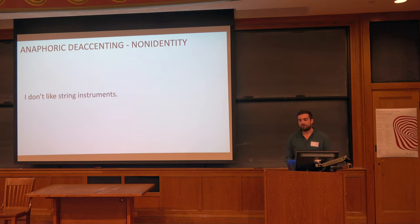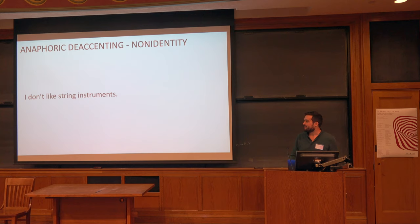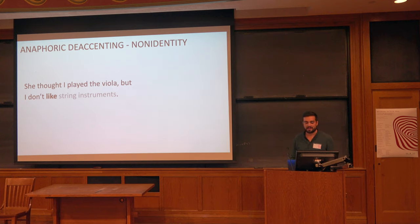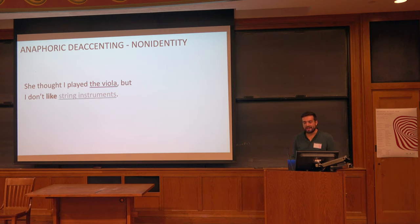An effect that's pretty widely reported in the meaning-side literature on prosody is that we can actually observe this effect under non-identity too. So if I change the sentence from 'I don't like the viola' to 'I don't like string instruments,' it's been reported that we can get the same effect. If I had an antecedent like 'she thought I played the viola,' I might still say 'but I don't like string instruments.' It's pretty intuitive: viola is some kind of semantic antecedent for 'string instruments.'